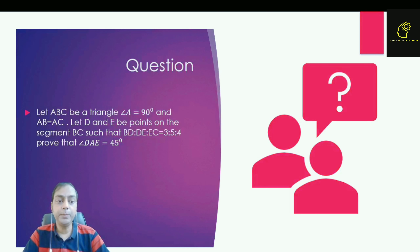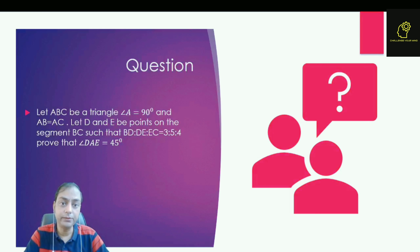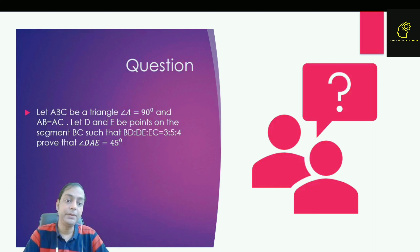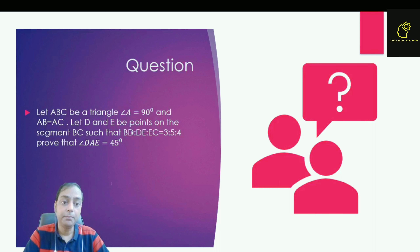Hello students. In this video I am going to discuss a question of symmetry. This question is from RMO Exam 2013. The question is: let ABC be a triangle in which angle A is equal to 90 degrees and AB is equal to AC. Let D and E be points on segment BC such that BD to DE to EC is equal to 3 to 5 to 4. We need to prove angle DAE is 45 degrees.